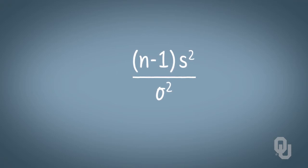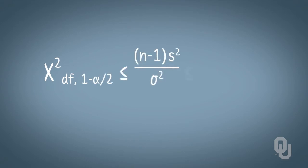We can do this by bounding our ratio between chi-squared degrees of freedom, one minus alpha over two on the lower bound, and chi-squared for a particular degrees of freedom, alpha over two on the upper bound.